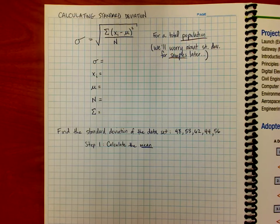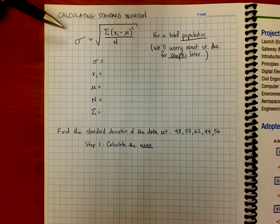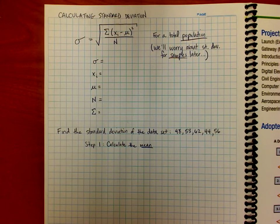So let's start with this. Here's our formula that we're given in our formula sheet, standard deviation. This is for a total population. So in other words, like if I knew every single data set, like if I went and did a survey of people in the class and I talked to every single person, that would be a population.